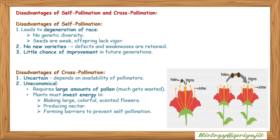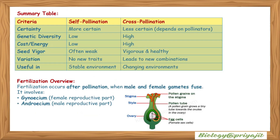Disadvantages of cross-pollination: it is uncertain and depends on the availability of pollinators; it is uneconomical as it requires large amounts of pollen and much gets wasted; plants must invest energy in making large, colorful, scented flowers, producing nectar, and forming barriers to prevent self-pollination.